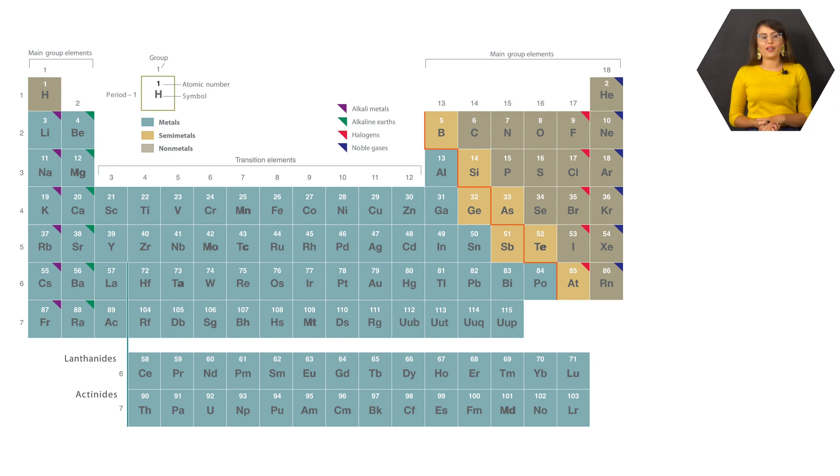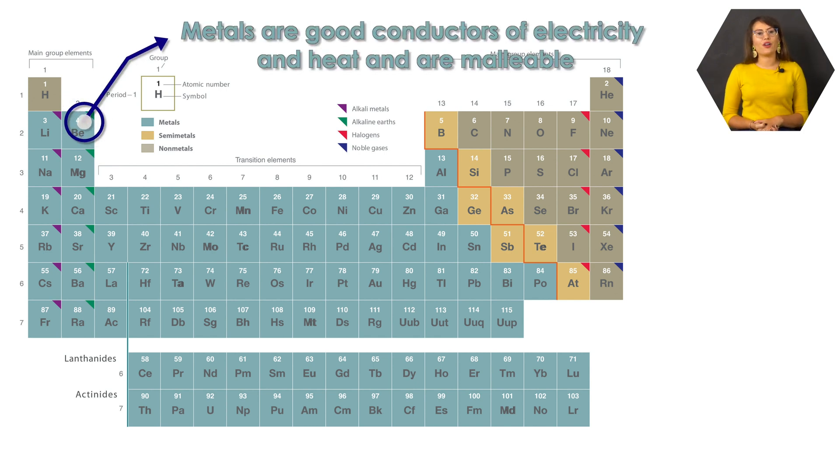The periodic table also can be separated into different sections based on type. Elements on the left side of the periodic table are metals, and are further separated into transition metals, with the lanthanide and actinide metals at the bottom.